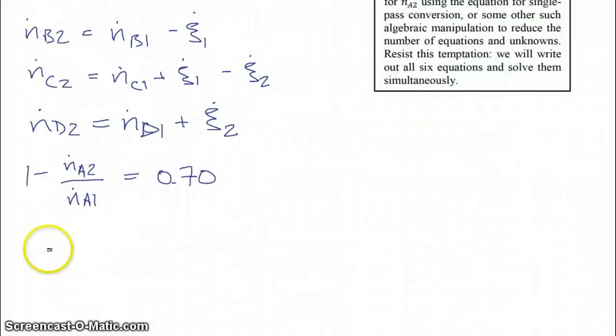And for our selectivity, the desired moles of our desired product, which is N dot of C2 minus N dot C1, those are the moles of C that are formed in the reaction, divided by those of our undesired product, is equal to 4. So that's our selectivity of 4.